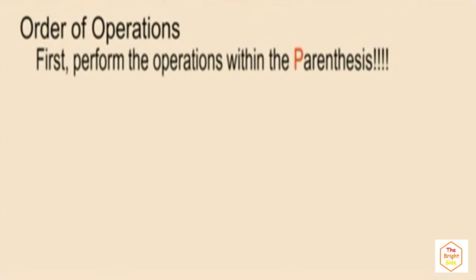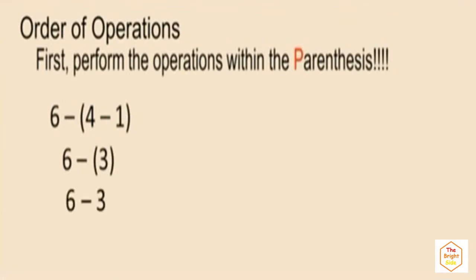For now, the first thing you do is perform the operations within the parentheses. For example: six subtract the quantity four subtract one. Notice four subtract one is in parentheses — four subtract one is three. When you subtract a positive number, the parentheses are not required, so we write six subtract three, which is three.